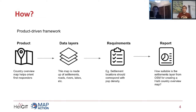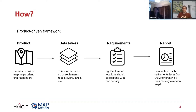Starting with a product — for example a country overview map — we work to concretely define what that product is and what we want it to be used for. We then break that product down into all of its component layers, which might be different data layers from OpenStreetMap representing features like roads, rivers and lakes. For each of these layers, we break them down in terms of the requirements we have and the data quality considerations, such as wanting settlement locations to correspond with population density, or the road network to be topologically accurate and fully connected.